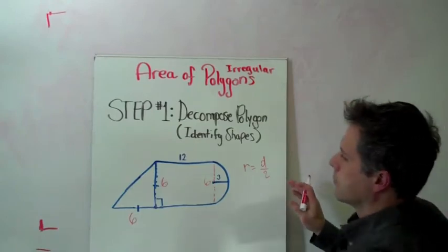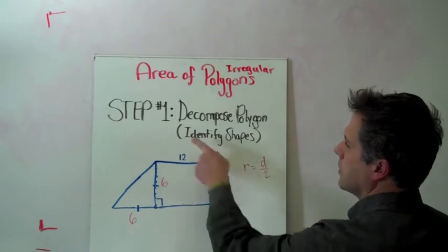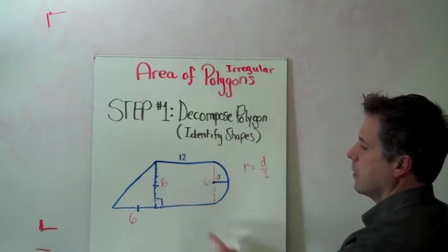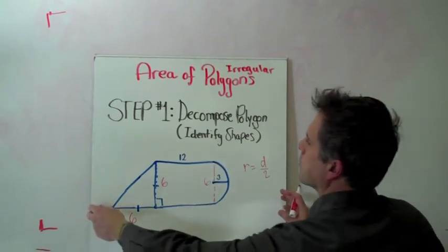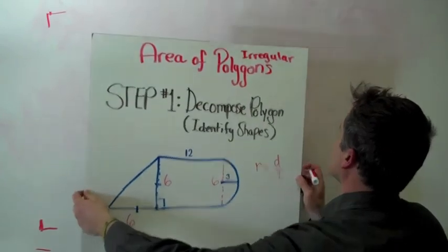Let's take a look at our next step. Let's get this out of here. So we got a triangle. We decompose the polygon. We have a triangle, a rectangle, and half a circle. Step 2.